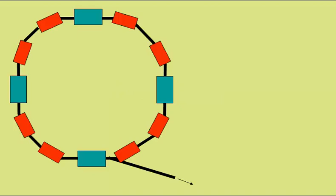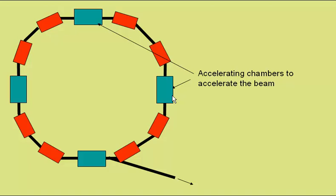It consists of a circular tube around which are placed accelerating chambers. These accelerate the beam of particles passing through using electric fields. We also have magnetic fields at points to bend the beam, allowing it to travel in a circle.